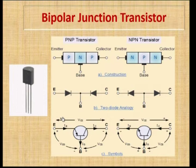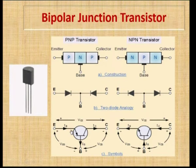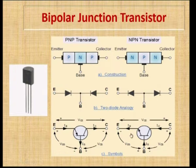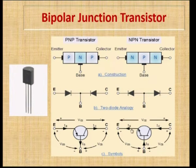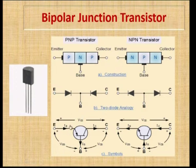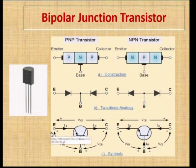The conventional current in a transistor is shown in its symbol. In the PNP symbol, the solid arrow mark shows the direction of Emitter current flowing into the base. In NPN, the Emitter current flows outward from base to Emitter. We can also observe the different voltages: VCE is the voltage across Collector and Emitter, VCB is across Collector and Base, and VEB is across Emitter and Base.